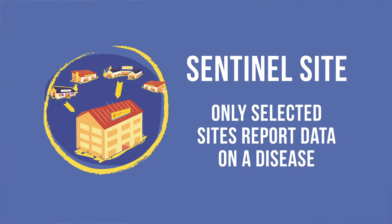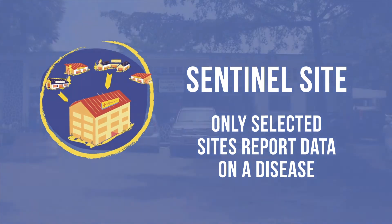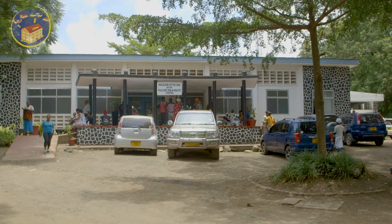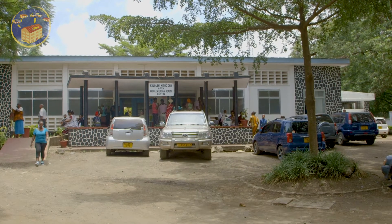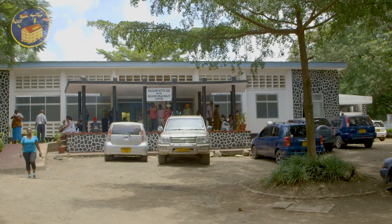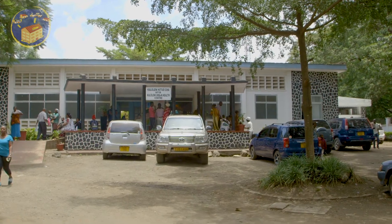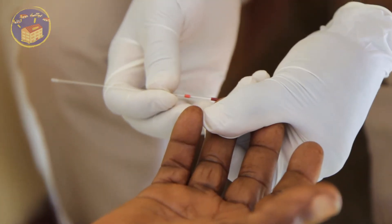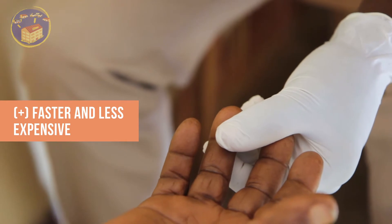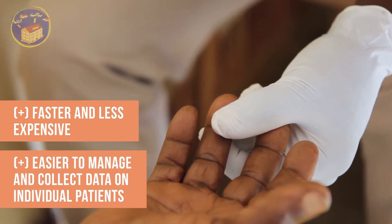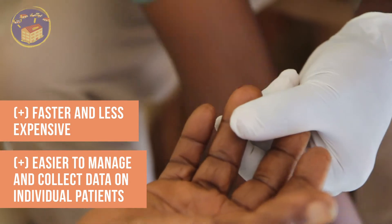With sentinel site surveillance, only carefully selected sites report data on a disease. This method is used when high-quality data are needed about a particular disease that cannot be collected through passive surveillance. Sites are selected if they have a high probability of seeing cases of the disease and have good lab facilities and well-qualified staff, such as large hospitals. Sentinel surveillance is faster and less expensive than passive surveillance, and it is also easier to manage and collect data on individual patients.